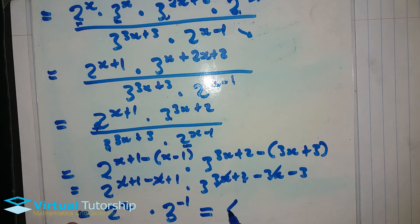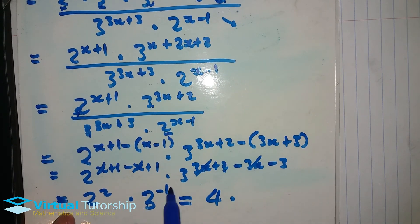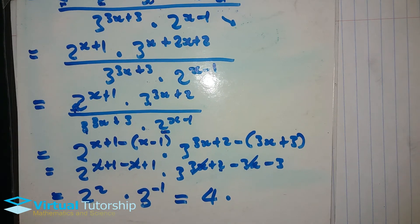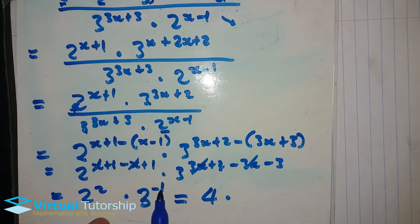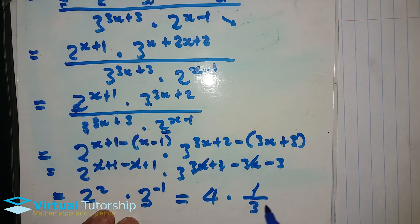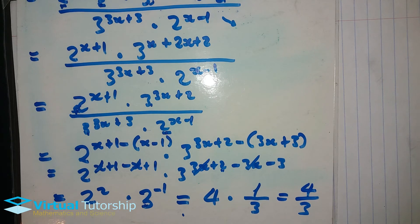That gives us 4 times 1 over 3, because of the corollary for negative exponents. So the final answer is 4 over 3.